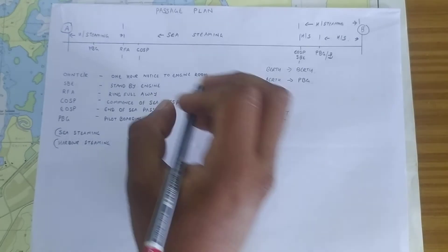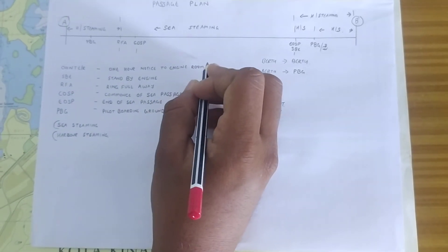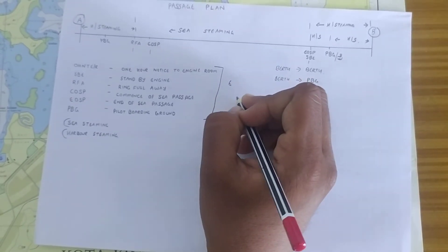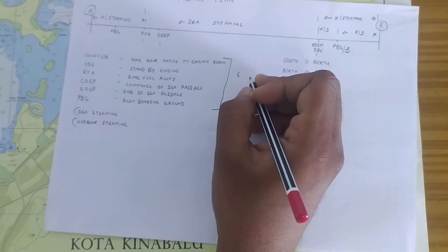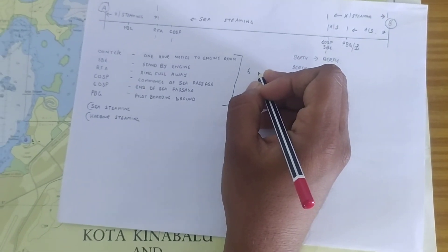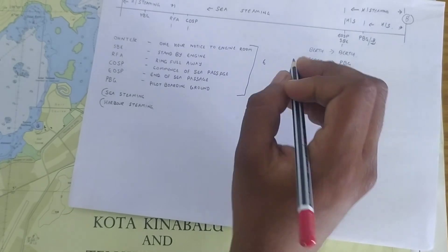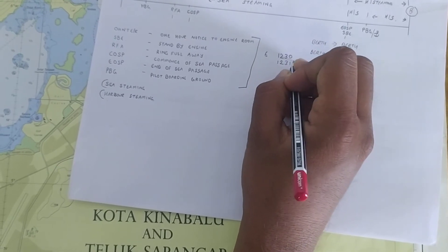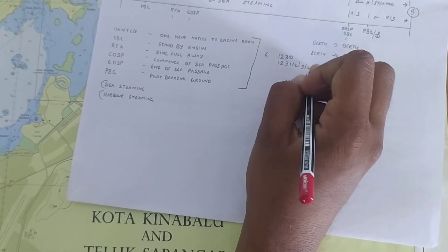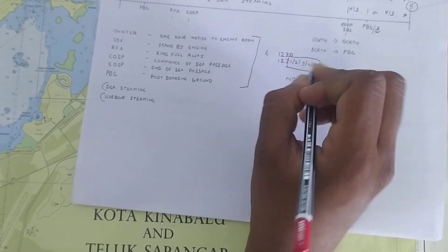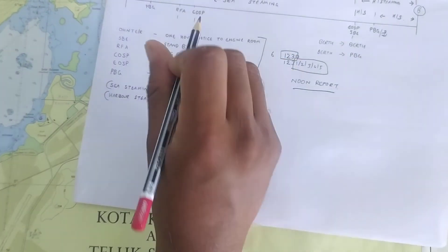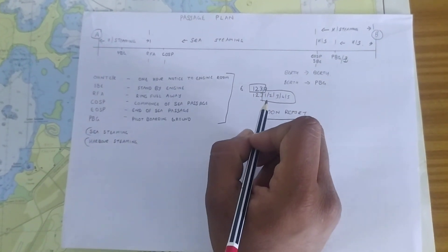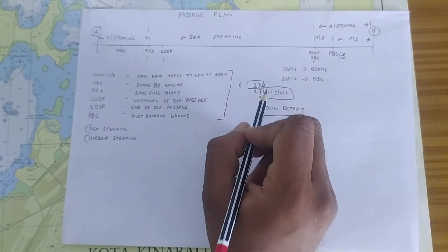Whatever times you write, try to write it in the multiples of 6. Suppose you are having 1230 as your RFA, make it 1230. So, do not make it at 1231 or 2 or 3 or 4 or 5. Because, it will be very easy for you to calculate the distance and the corresponding time. So, always we try to give this timings in multiples of 6.